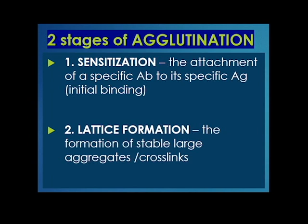Agglutination occurs in two stages. The first is sensitization — the attachment of a specific antibody to its specific antigen, which is the initial binding. The second stage is known as lattice formation — the formation of stable, large aggregates or the formation of crosslinks.